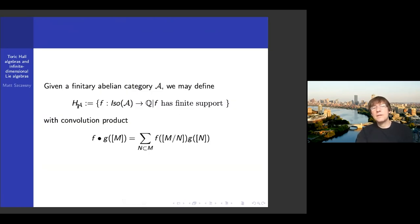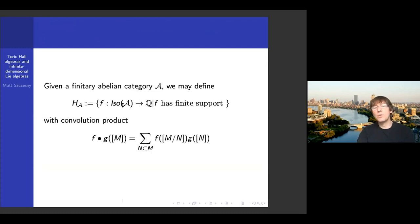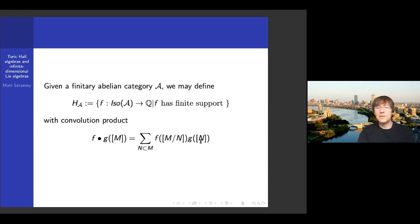A Hall algebra, as a vector space, is just functions on isomorphism classes in the category — this is the most naive version. We take functions on isomorphism classes that have finite support, meaning they are nonzero on only finitely many isomorphism classes. We equip these with a convolution product: the convolution evaluated on an object M is obtained by summing over all subobjects N of M, evaluating f on the quotient and g on the subobject. If you squint and replace the summation with an integral, this is reminiscent of convolution in harmonic analysis.